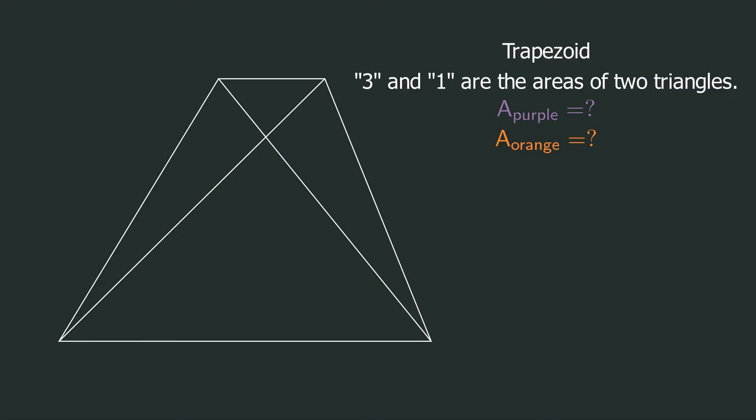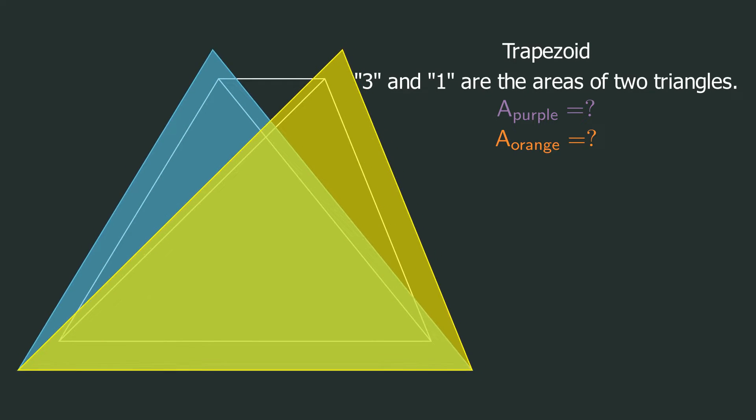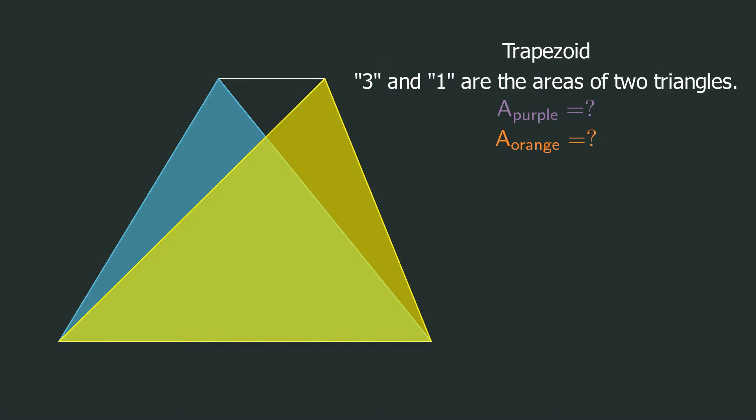In the trapezoid, connect the diagonals. First, look at these two triangles. Can you see their relationship? They share the same base and the height is the same, so their areas are equal, which is quite simple. This triangle is their common part.